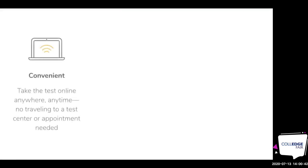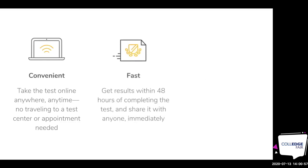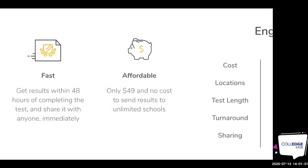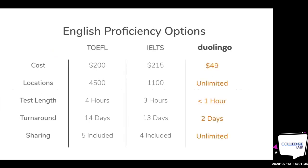A little bit more about our test. It's convenient — you take the test online, anywhere, anytime. It's on demand, and all you need is a laptop with a forward-facing camera or a desktop with a camera. The test is around an hour and you get your results in around two days or less. You can share it with any university immediately. And the test is very affordable at only $49. When you pay for the test, there are no more charges or fees — you can share those results with as many universities as you wish.